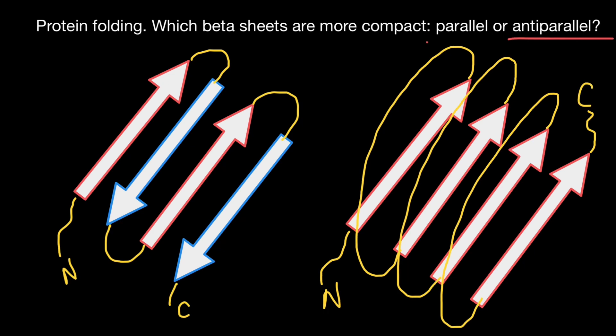Now as you see, when beta sheets are arranged parallel, they have to be connected by much larger loops.